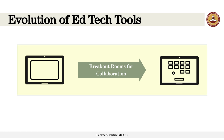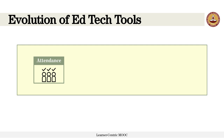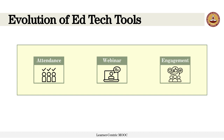Breakout rooms became a cornerstone feature, enabling seamless division of large groups into smaller, manageable chunks that could also incorporate interactivity. Attendance records were integrated alongside learning analytics, enabling educators to gain deeper insights into student engagement, participation, and attendance patterns. The evolution further introduced various session types catering to diverse needs, including webinars and meetings. Different roles and features were aligned, offering tailored experiences for hosts, presenters, and participants — fostering interactive, engaging, and purpose-driven learning environments.